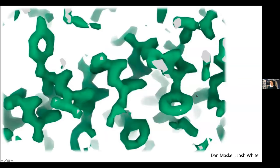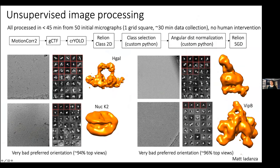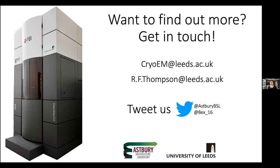Essentially what we're hoping to do is take this quality data, feed it into computational pipelines, and start to generate structures within 30 minutes of data collection. This means that if you're interested in a medium-throughput approach — for example solving protein-antibody structures — then cryo electron microscopy may be a technique for you. That's everything I've got to say. Thank you very much for your attention. I'll be happy to take any questions.